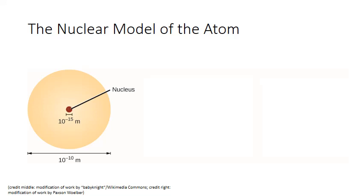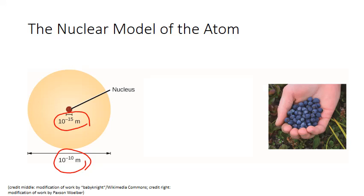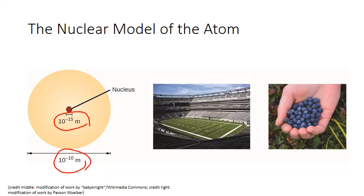If the diameter of an atom is on the order of 10 to the negative 10 meters, then the diameter of the nucleus is 10 to the negative 15 meters. To visualize this: if we were to blow up that nucleus to the size of a blueberry, the atom itself would be the size of a football field. So the vast majority of the space occupied by the atom is defined by those tiny electrons, while the mass is determined primarily by the protons and neutrons crammed into that tiny nucleus.